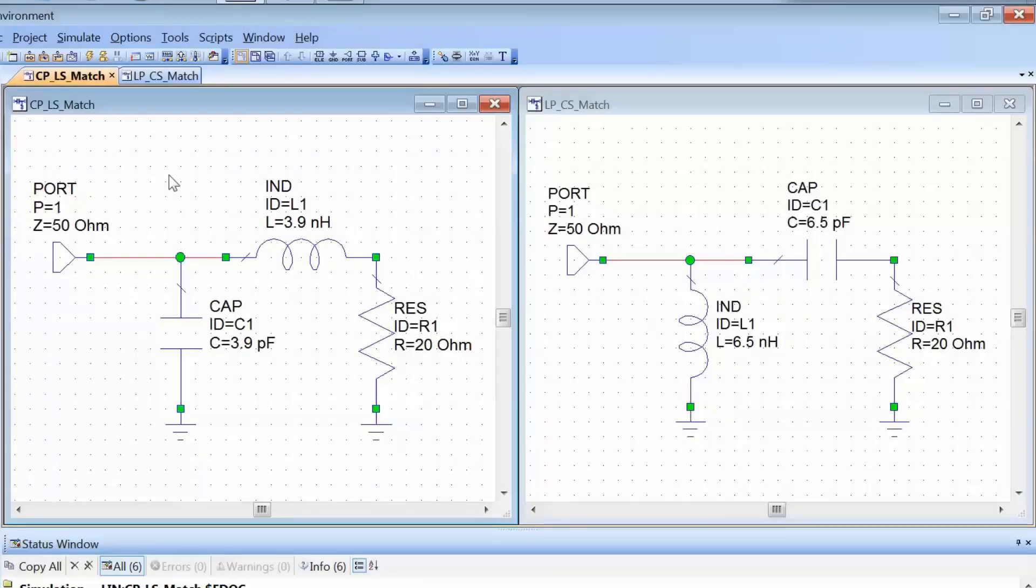In our previous tutorial we looked at how to match a 50 ohm source impedance to a 20 ohm load impedance using the Smith chart. We saw how this can be accomplished in different ways, and for example, by going either up or down a constant resistance or conductance circle, we change the elements that our network comprises of. But what are the differences between the different network types?